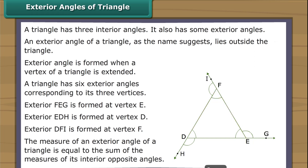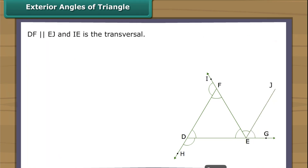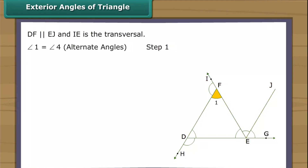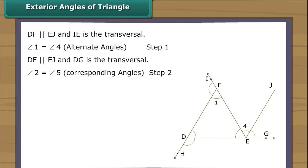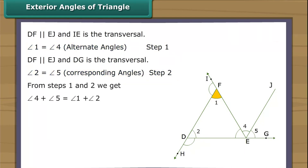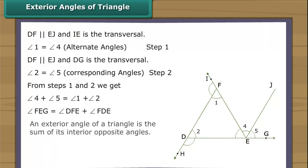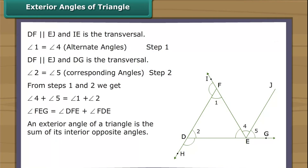Let us now prove this. We draw a line segment EJ from point E such that EJ is parallel to DF. Regarding IE as a transversal intersecting the parallel lines DF and EJ: angle 1 equals angle 4, and angle 2 equals angle 5 (corresponding angles). From these two steps, angle 1 plus angle 2 equals angle 4 plus angle 5, meaning angle FEG equals angle DFE plus angle FDE. Therefore, an exterior angle of a triangle is the sum of its interior opposite angles.